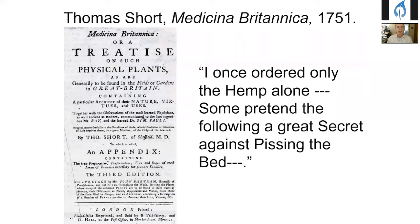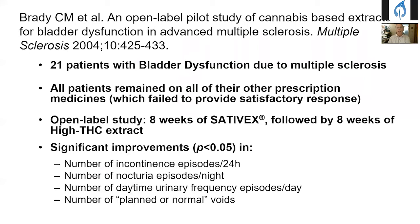From 18th-century England, a treatise on plants noted hemp as a great secret against pissing the bed — more properly, enuresis, or lack of bladder control at night. We know from modern studies that cannabis is very effective in treating lower urinary tract symptoms. Specifically, a study in multiple sclerosis with 21 patients who remained on prior medicines that had failed showed significant improvements in the number of incontinence episodes per day, episodes of nocturia, and the number of daytime voids — substantiation for another old claim.